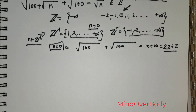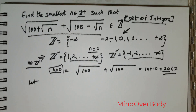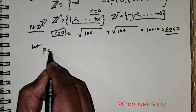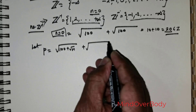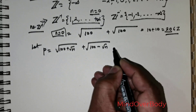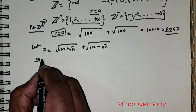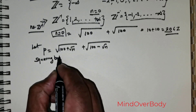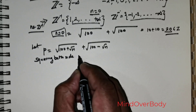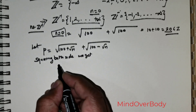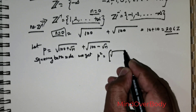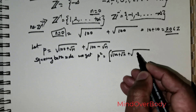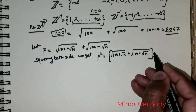So what I am going to do is assign this entire expression to some p. Let p be equal to the square root of (100 + √n) plus the square root of (100 − √n). Now I will square both sides. If I do that, I arrive at p squared equal to the square of (√(100 + √n)) plus the square of (√(100 − √n)), expanded using the identity for (a + b)².